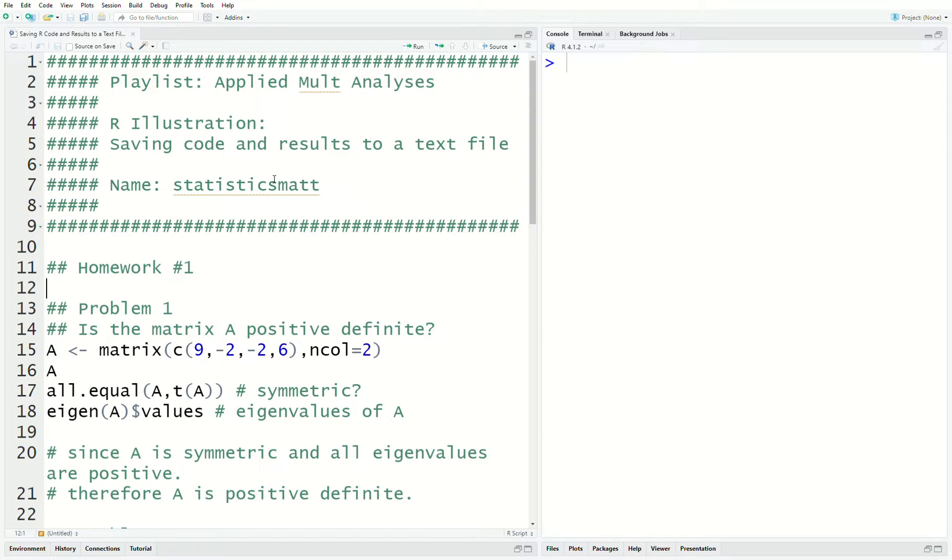Hello, this is the next video in a playlist that I'm calling Applied Multivariate Analysis. And in this video, we're going to do an R illustration of how to save your code and the results to a text file. Now, this isn't a very high-tech way to do it. It's actually pretty low-tech, but it's reliable and it works and it's one approach.